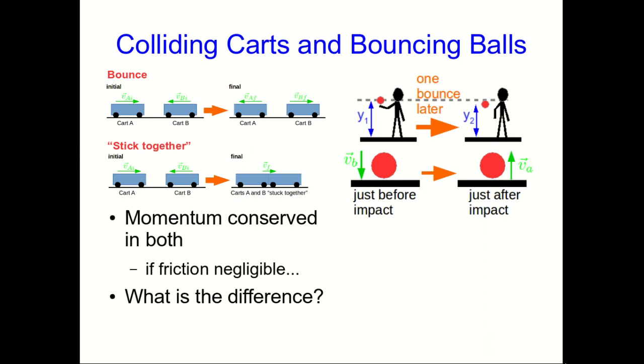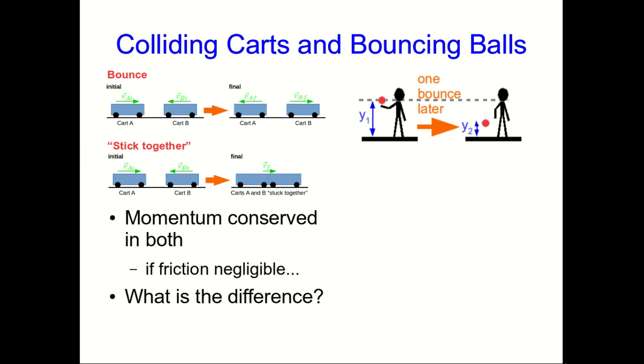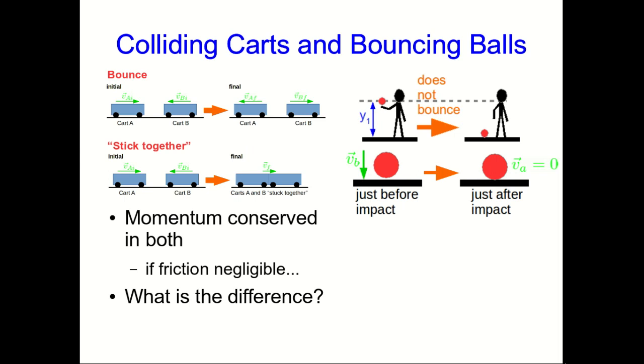On the other hand, you could have something like a squash ball which doesn't bounce back up nearly as high, because its speed just after impact is quite a bit less than before. The most extreme case is something like a bean bag—you drop it and it just goes splat, and its speed after impact is zero.